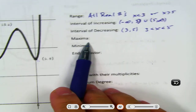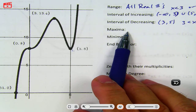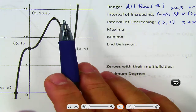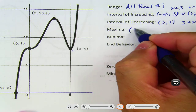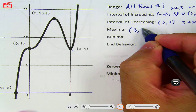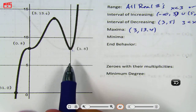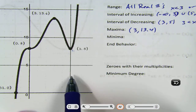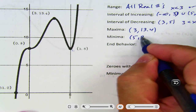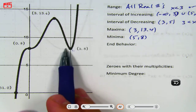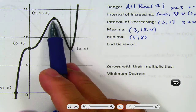Anyway, maximum. That's 360. What is the maximum? That's the highest: 3.1, 3.4 — so 3 comma 13.4. What about our minimum? That's 5.8. So minima is a low point. Maxima is a high point.